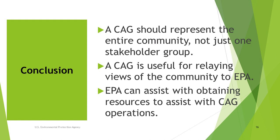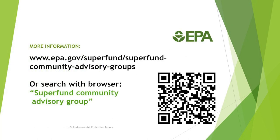In conclusion, a CAG is a mechanism that can help your community work with EPA in making site-related decisions. The CAG should represent the diversity of your community and various concerns and viewpoints. EPA can help your community form a CAG and help your group access resources for day-to-day operations. For more information, visit www.epa.gov/superfund/superfund-community-advisory-groups, where you'll find resources such as fact sheets, a toolkit to help you set up, organize, and run your CAG, guidance on CAG best practices, and contacts who can assist further.